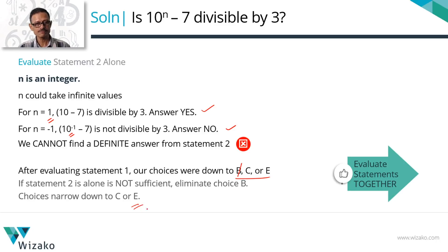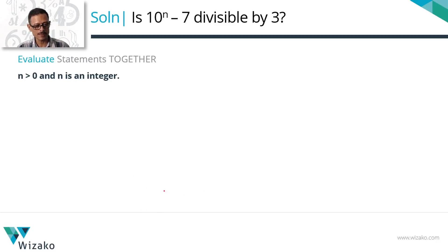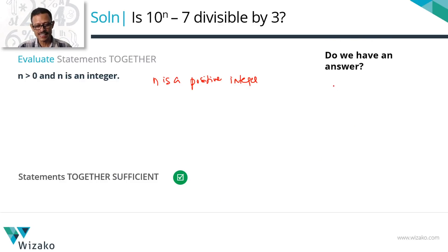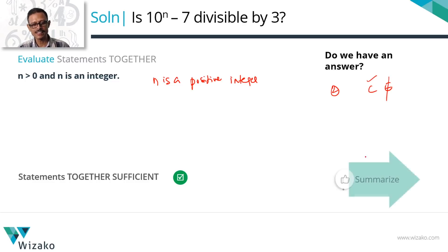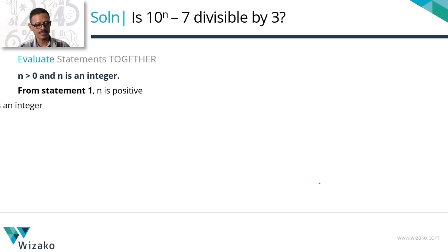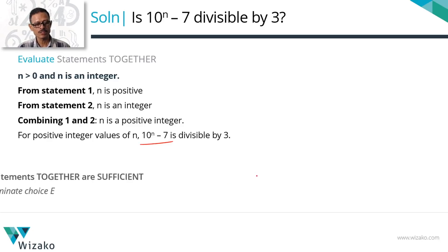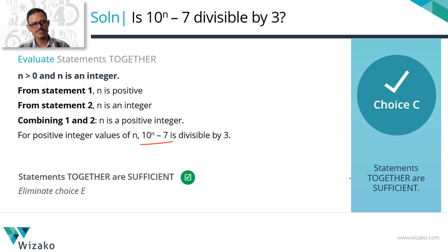Combining both statements: n > 0 AND n is an integer means n is a positive integer. For positive integer values, 10^n − 7 is always divisible by 3 — we verified this for n = 1, 2, 3. Statements together are sufficient. We were down to C or E; since together they are sufficient, eliminate E. Answer choice C is correct.